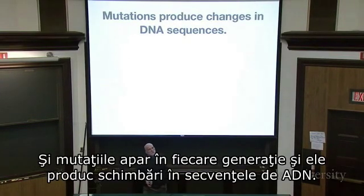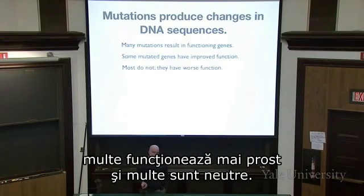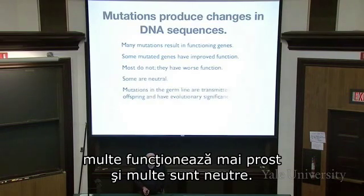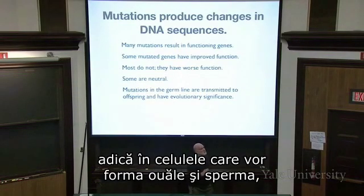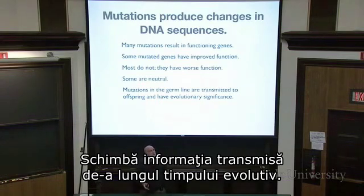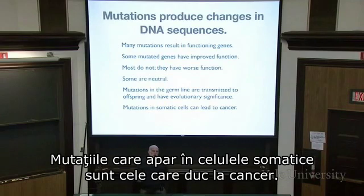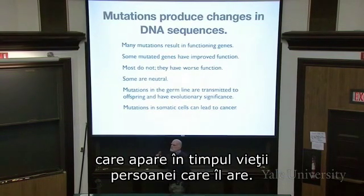Mutations are also occurring in every generation, producing changes in DNA sequences. Some make genes that are functional or even improved; many result in worse function; a lot are neutral. Mutations that occur in the germline — in cells that will form eggs and sperm — get transmitted to offspring and have evolutionary significance. Mutations in somatic cells are what lead to cancer; cancer is a mutational process, and every cancer is a little evolutionary process within the lifetime of the person who has it.